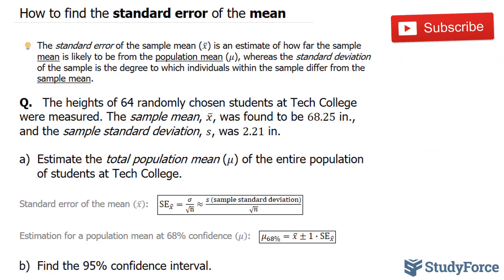To do this, we'll start off by using the following formula, where we have standard error is approximately equal to the sample standard deviation over the square root of the number of observations, and this will give us our standard error. The difference between this symbol and this symbol both signify standard deviation, except this symbol signifies standard deviation for the whole population, whereas this represents the standard deviation for the sample 64.